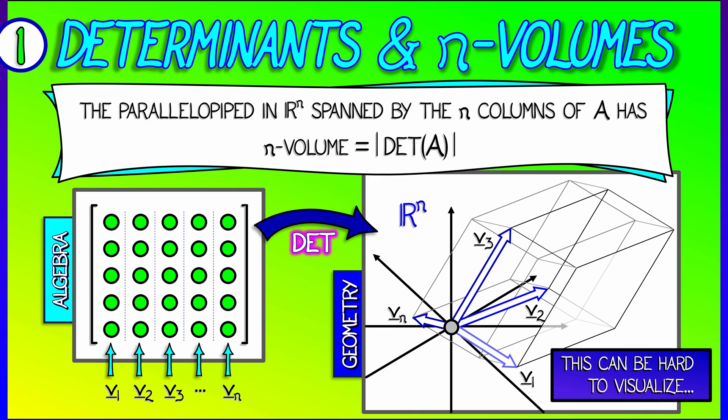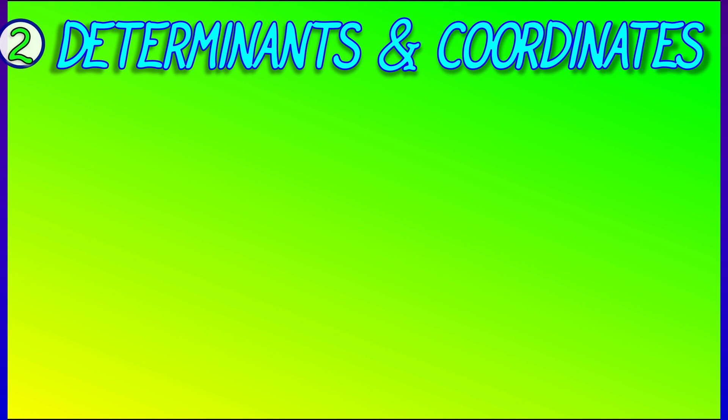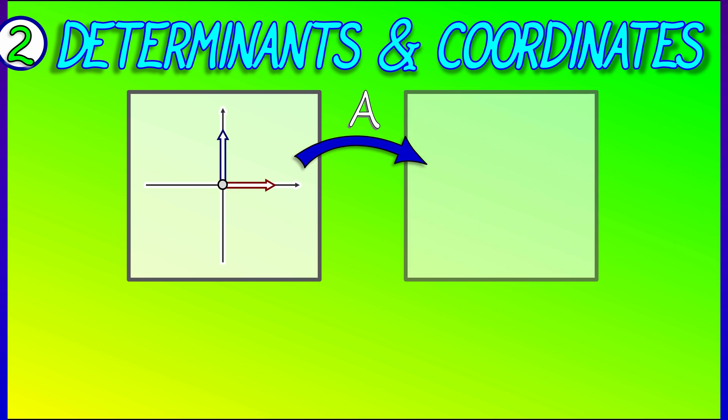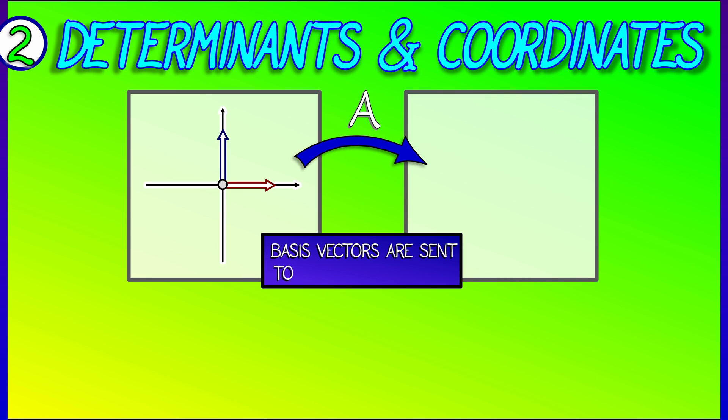Now that can be a little hard to see, but knowing that fact about the volume tells us how to interpret things in terms of linear transformations. If we take the basis vectors in Rn and think of A as a linear transformation,